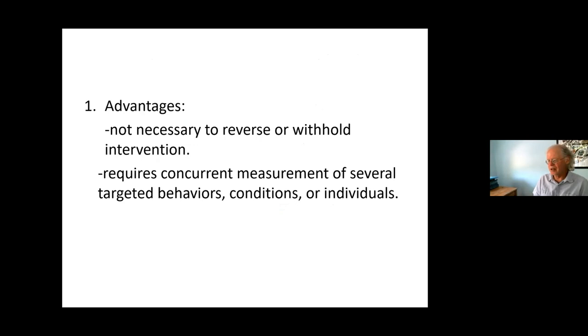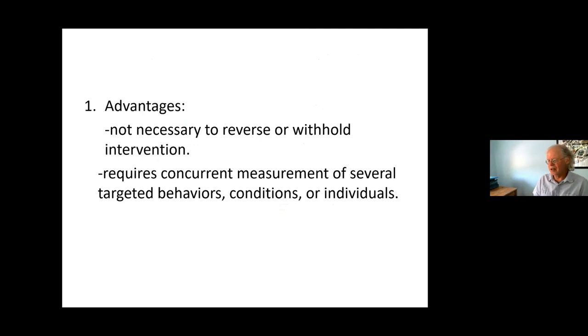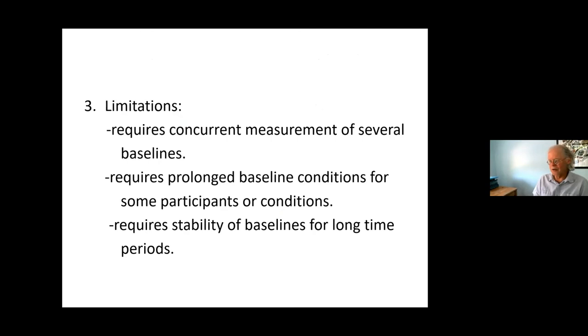Multiple baselines across participants, behavior, settings. Advantage is not necessarily to reverse withhold interventions, and requires concurrent measures of several targeted behaviors, conditions, or individuals. Those are all strengths or advantages. Limitations: it requires concurrent measure of several baselines. You have to have your baselines occurring at the same time. It can require prolonged baseline conditions for some participants or conditions. If you're dealing with somebody who's aggressive, you're going to have to keep them in a baseline condition over time. And it requires stability of baselines for long time periods. Again, human behavior is variable.